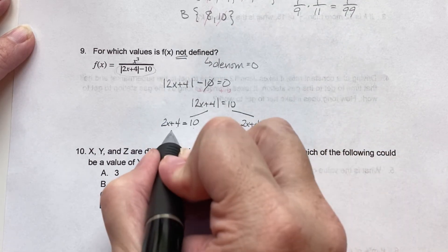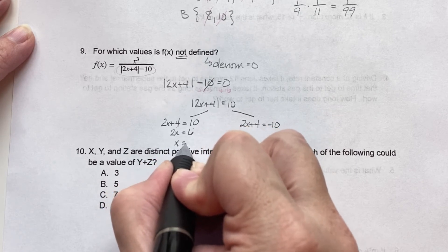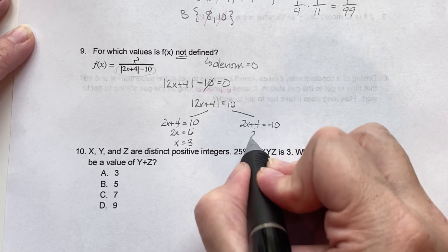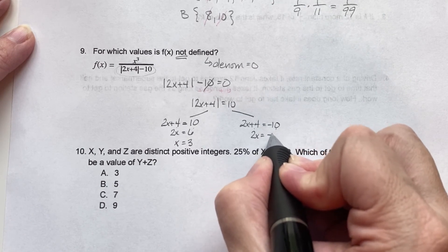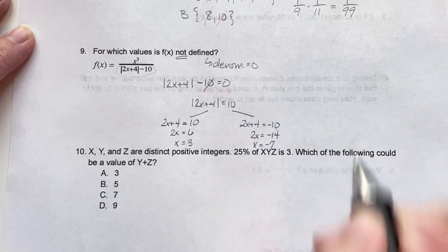So now we just solve for x. So subtract 4, that equals 6, divide by 2, so that equals 3. Again, subtract 4, negative 14, divide by 2, negative 7.